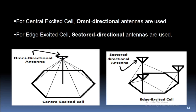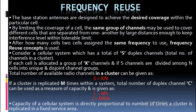For central excited cells, omnidirectional antennas are used. For edge excited cells, sectored directional antennas are used. The base station antennas are designed to achieve the desired coverage within the particular cell. By limiting the coverage of a cell, the same group of channels may be used to cover different cells that are separated from one another by large distances, enough to keep interference levels within tolerable limits. The frequency reuse concept determines after how many cells two cells assign the same frequency to use.